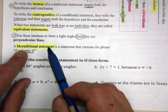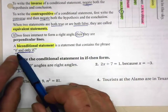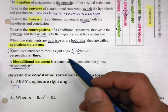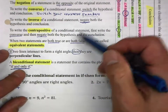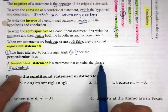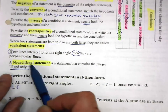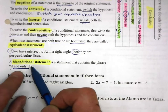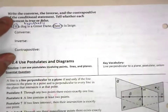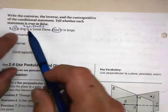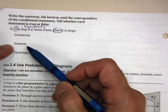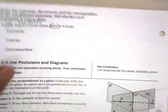A bi-conditional statement is a statement that contains the phrase 'if and only if.' If you see that phrase, it's definitely a bi-conditional statement. You will need to take a conditional statement and create the converse, the inverse, and the contrapositive of it.